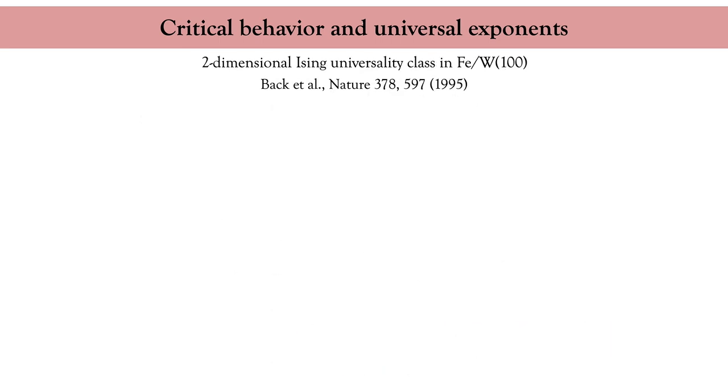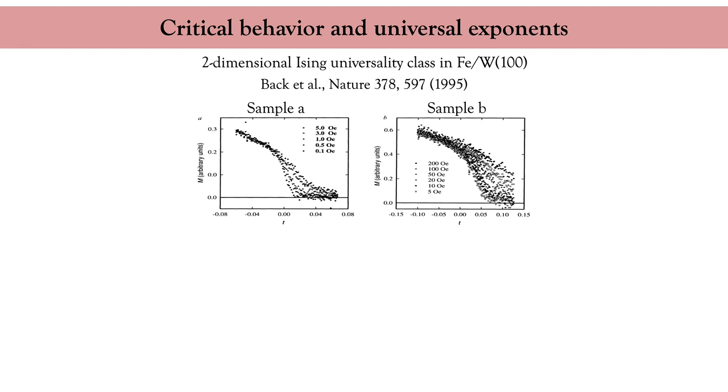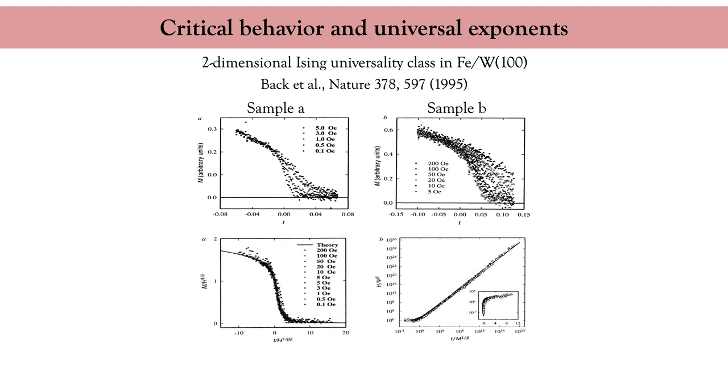Another nice example is a work by Kisker and co-workers published in Science in 1995. The authors measured the temperature dependence of the magnetization of an ultra thin layer of iron deposited on tungsten substrate. This system is expected to behave like a two-dimensional magnet. The results are given here for two different samples. When you plot these results on the same graph, you obtain once again a universal scaling that fits the one obtained by the two-dimensional Ising model. So that's another beautiful example of universality class at a critical point.